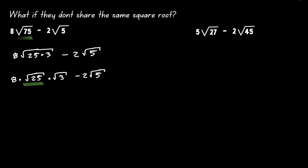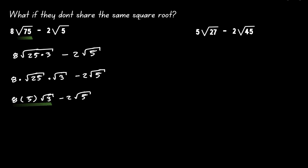We do know what the square root of 25 is — the square root of 25 is 5. So now we have 8 times 5 times the square root of 3. Since they are all multiplying, we can multiply the first two values, and that will give us 40.